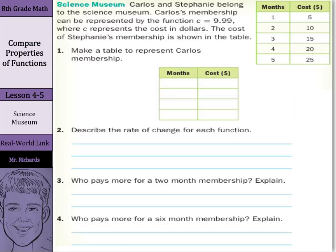Our real world link deals with the Science Museum. Carlos and Stephanie belong to the Science Museum. Carlos' membership can be represented by the function C equals $9.99, where C represents the cost in dollars. The cost of Stephanie's membership is shown in the table. Now we want to make a table to represent Carlos' membership.